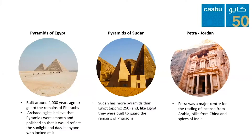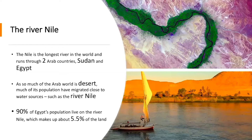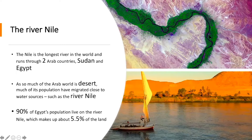But the Arab world isn't just desert land. The Nile is the longest river in the world and runs through two Arab countries, Sudan and Egypt. Land along the Nile is very fertile and there are bushes, trees, vast grasslands and fields that run alongside it. So as so much of the Arab world is desert, much of its population have migrated to live closer to water sources such as the Nile. Around 90% of Egypt's population live on the Nile, which is about 5.5% of the land.